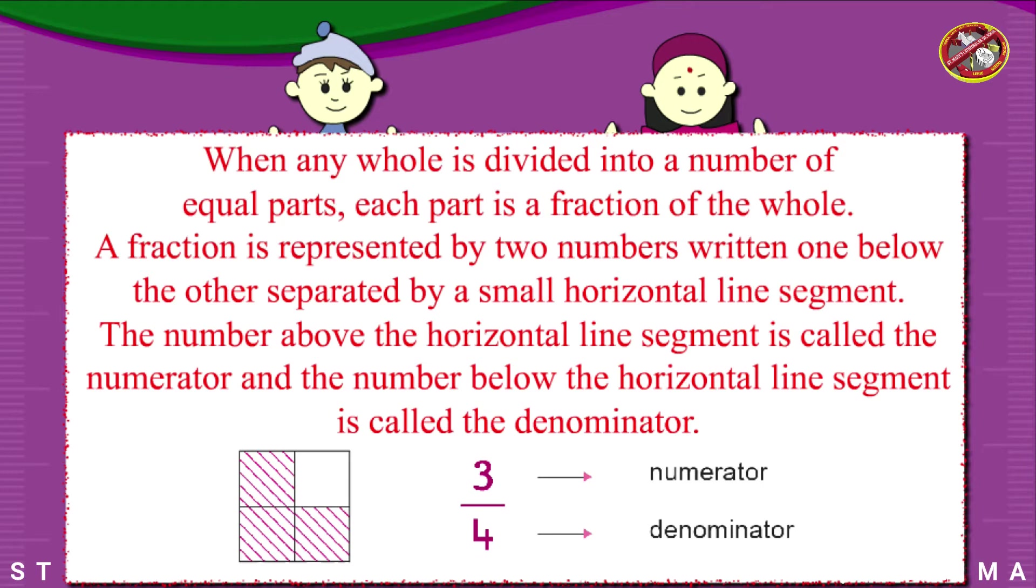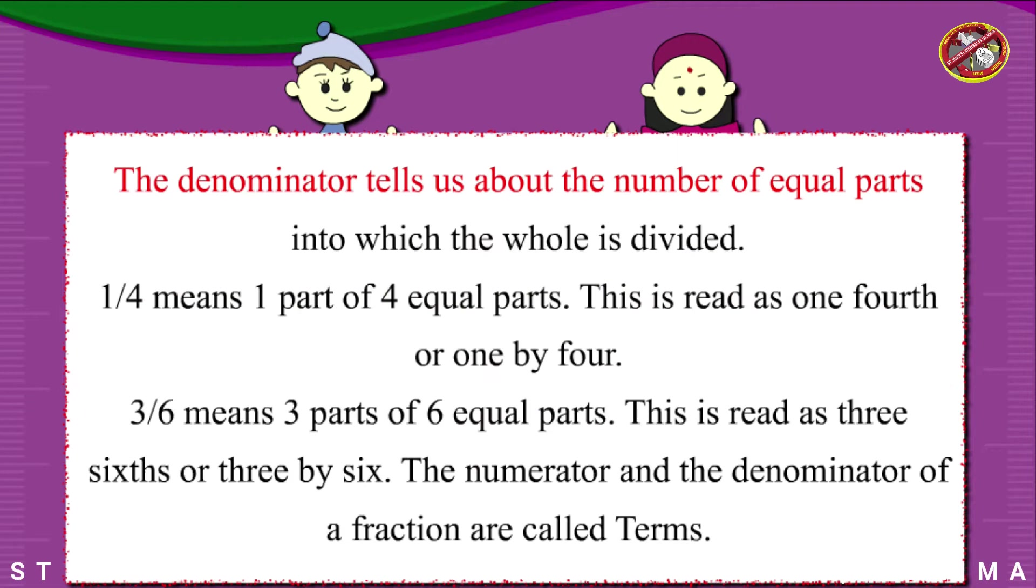Numerator. Denominator. The denominator tells us about the number of equal parts into which the whole is divided. 1/4 means one part of four equal parts. This is read as one fourth or one by four.